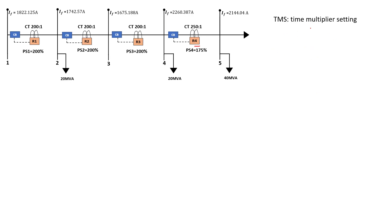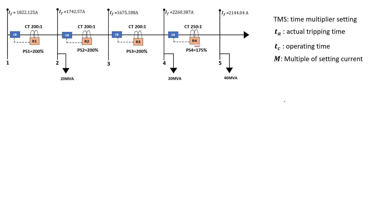If you watch that tutorial you'll understand exactly what we mean by Time Multiplier Settings. The other important factor is the actual tripping time — ta — that your IDMT relay is supposed to trip at, and then we also have tc, which is the operating time. The last element is the multiple of current setting, or multiple of setting current. You need to understand all of these elements if you want to calculate the IDMT relay tripping time.